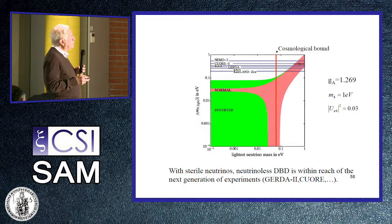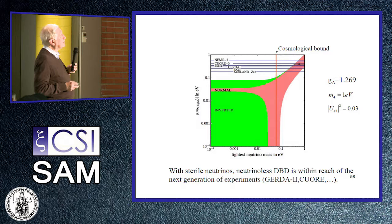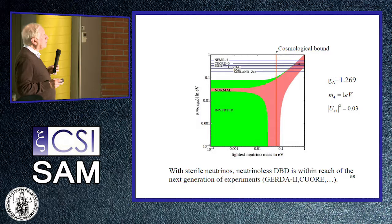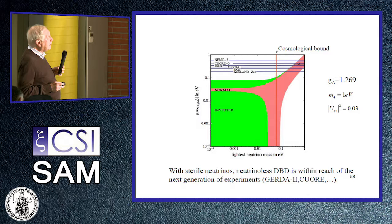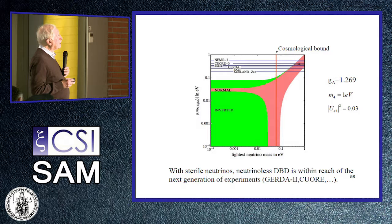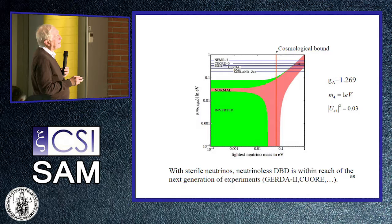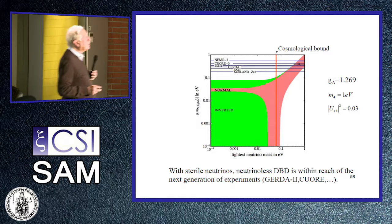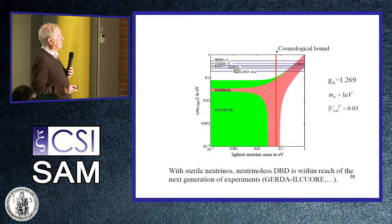By combining the cosmological bound on the sum of masses with the experimental limits, we may begin to disregard some theories about sterile neutrinos soon. We currently exclude a large region, and with KamLAND-Zen and future experiments this will extend further. The cosmological bound is shown as a red line, and combining cosmological bounds with experimental measurements, we may begin to exclude some suggestions for sterile neutrinos.